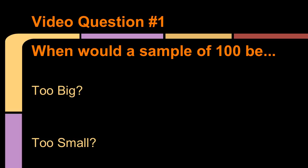So question number one says, when would a sample of 100 be too big? And the other part of that is, when would a sample of 100 be too small? So I'm asking for a population. In what instance would 100 as a sample size be too big? And which other instance would a sample size of 100 be too small? Pause while you write out your answers. Come back for question two.